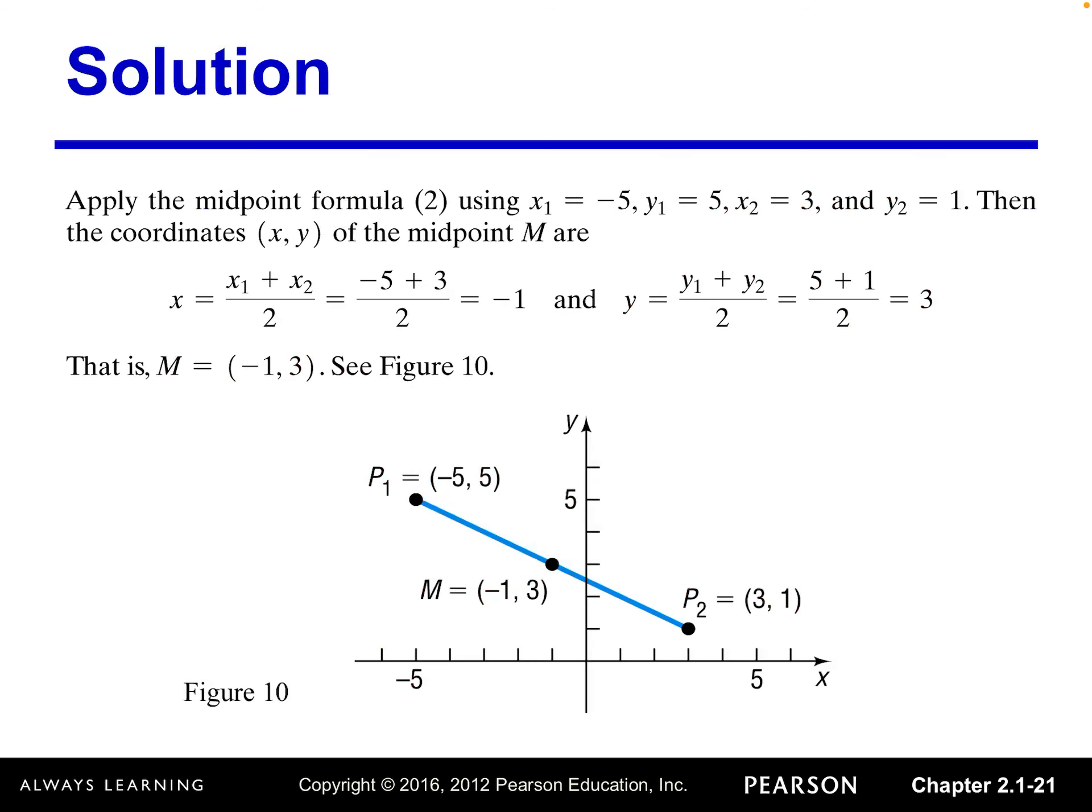So let's look at a more accurate one. That's a more accurate graph. So it's showing clearly, negative 1, 3. It is the middle of the line segment P1, P2. And then the calculation is showing the same result.